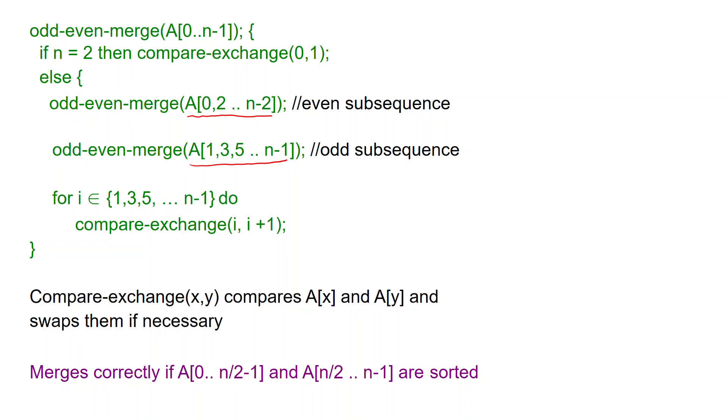And then we are going to do a final pass of compare exchange. We are going to compare exchange i and i plus 1 for i which is odd, 1, 3, 5. So we are going to compare exchange 1 and 2, then 3 and 4 and so on. And remember that compare exchange x and y compares a of x and a of y and swaps them if necessary. And what we claim is that this thing merges correctly under the assumption that the two halves a from 0 to n over 2 minus 1 and a from n over 2 to n minus 1 are already sorted.